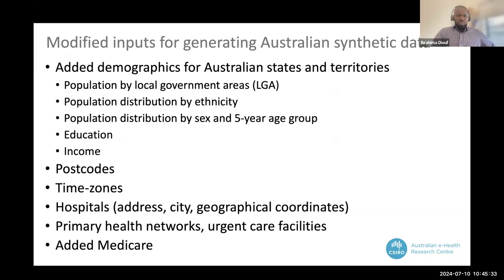We added the Australian population by local government area, with distributions by ethnicity, age group, education, and income. We added Australian postcodes, time zones, and hospital locations — since it can generate patients who went to a specific hospital at specific times — along with Australian Primary Health Network and urgent care facilities. We also replaced the healthcare insurance data with Medicare.